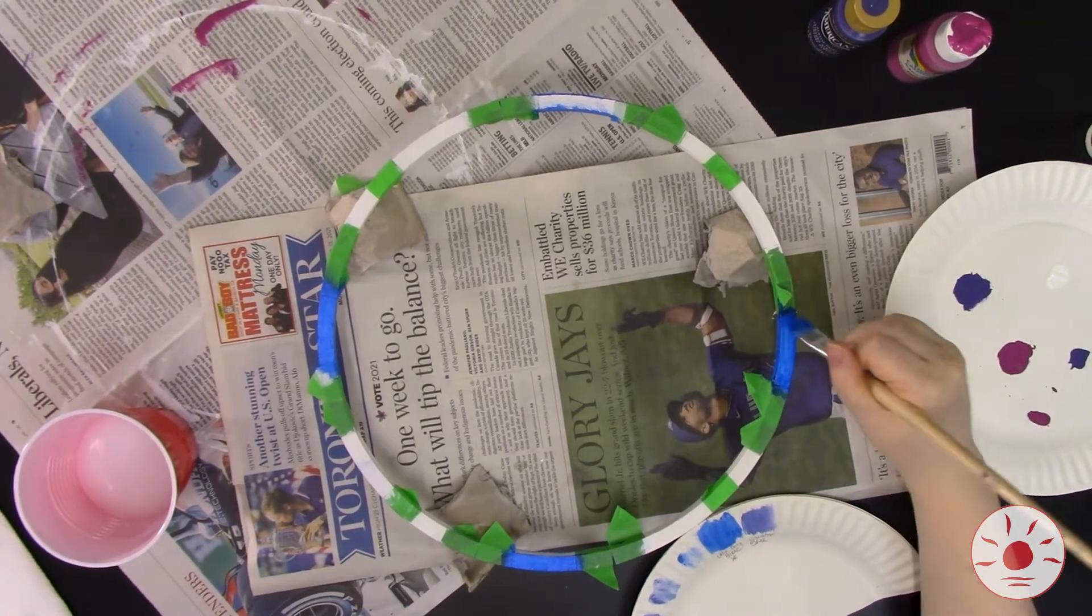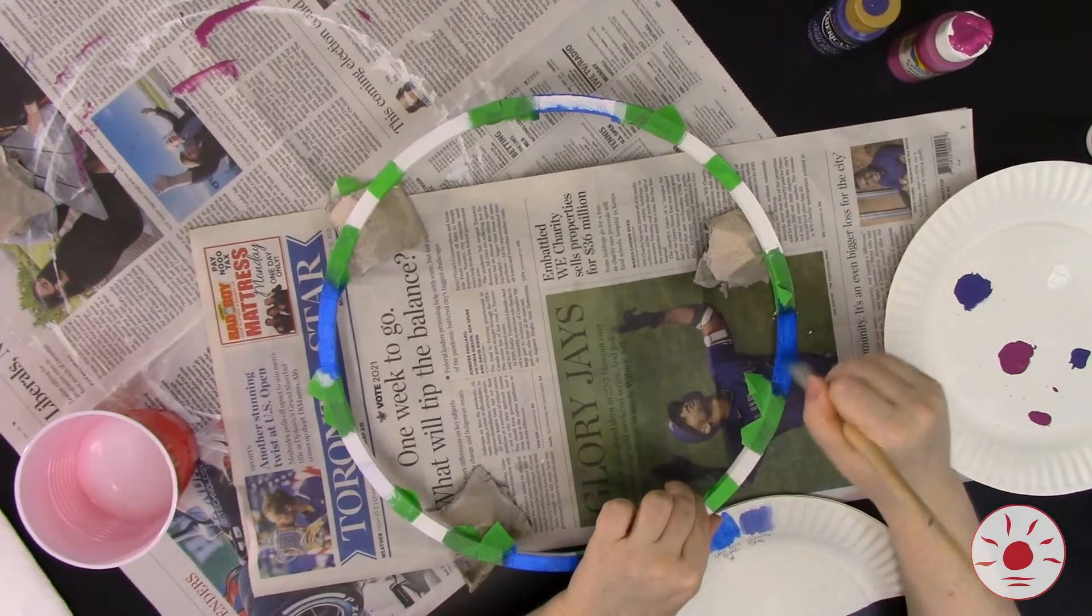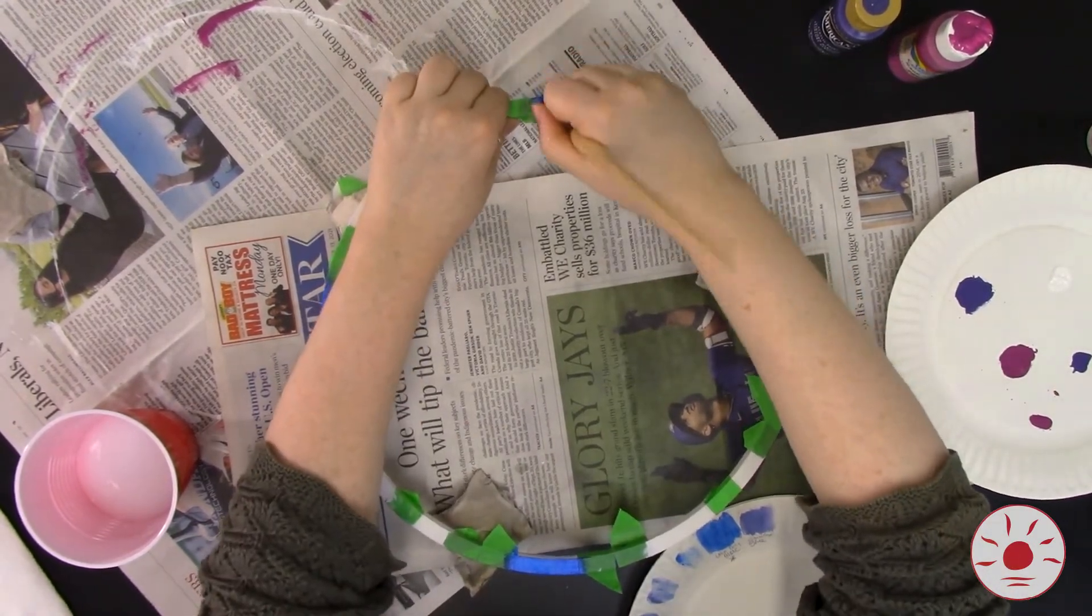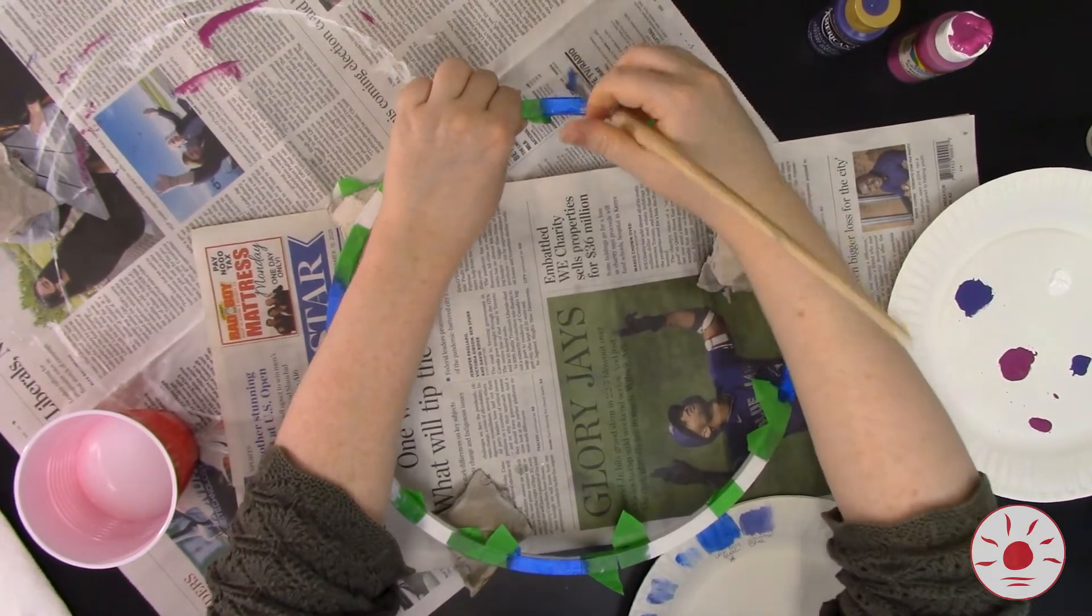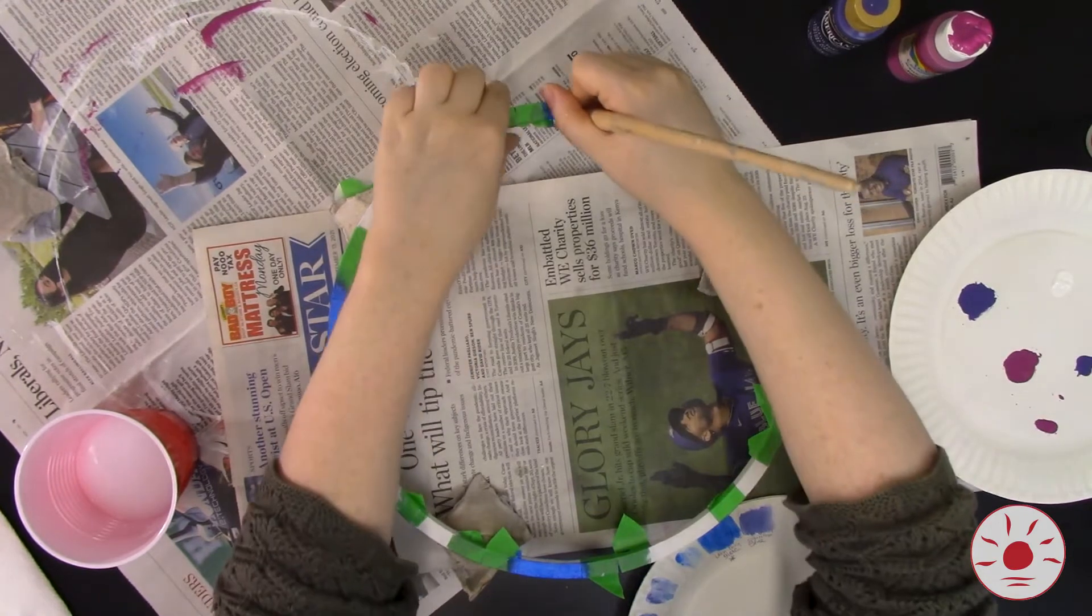Remember how we talked about remainders before? For this step, you'll want to make sure the number of colors you use goes into 20 evenly. That way you won't end up with two of the same color next to each other and your pattern will repeat perfectly. I'd recommend you paint your sections 2, 4, or 5 different colors.